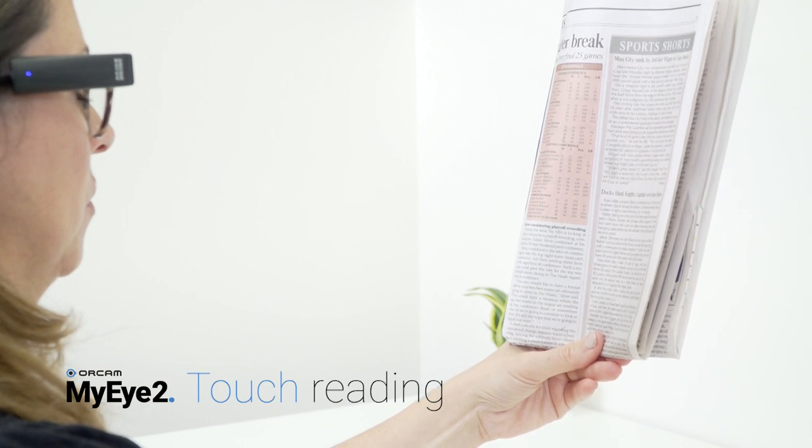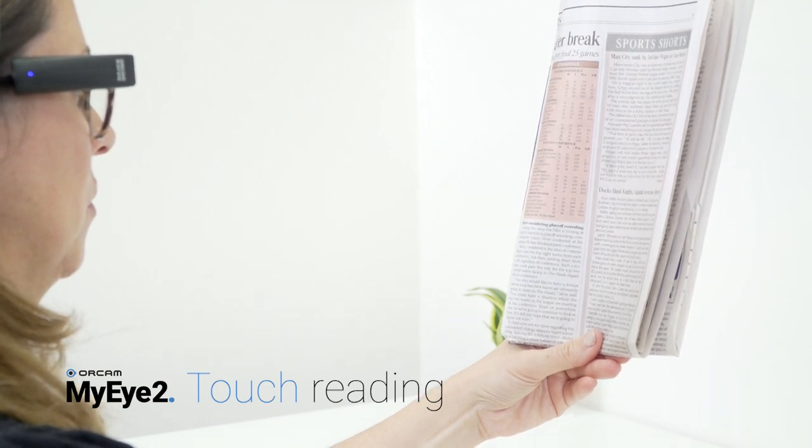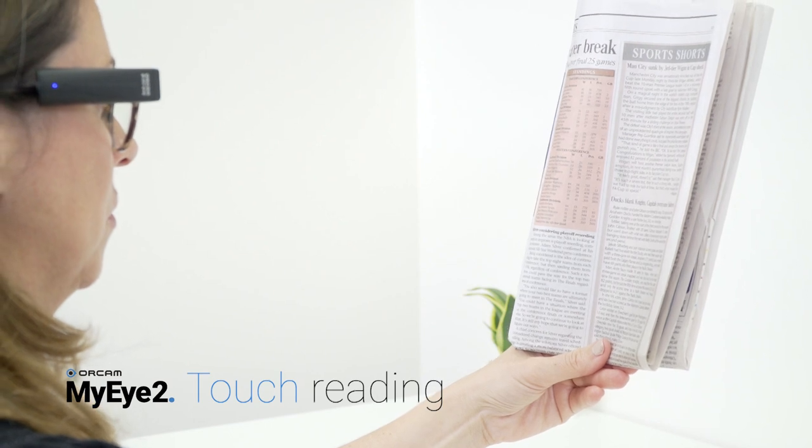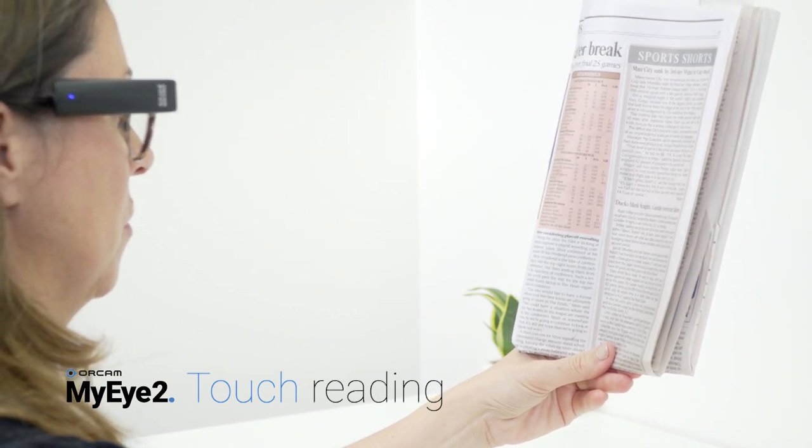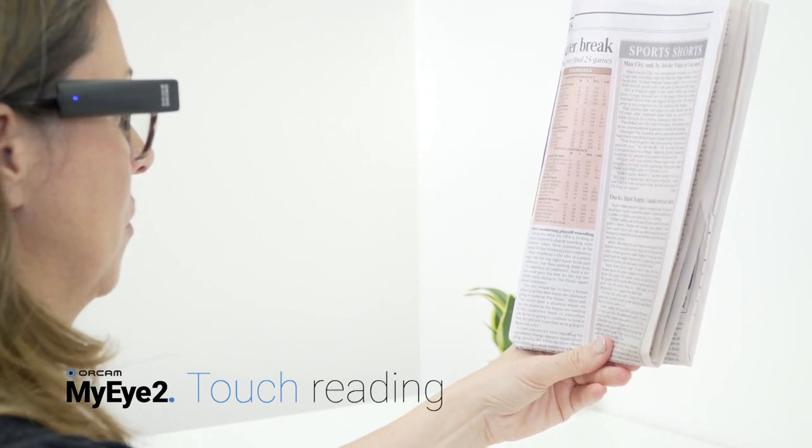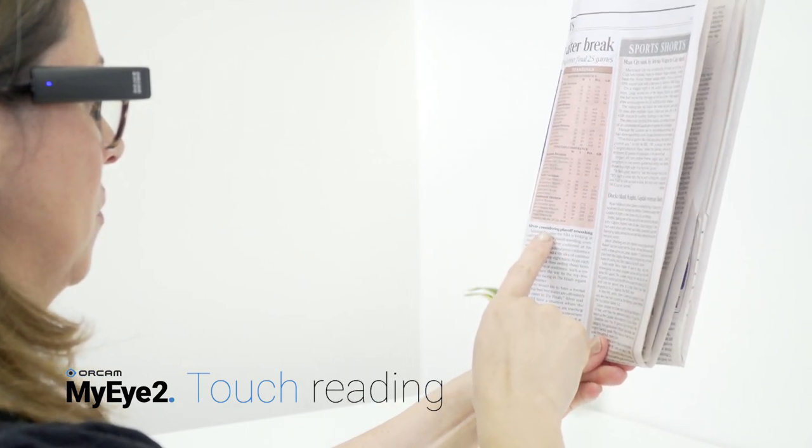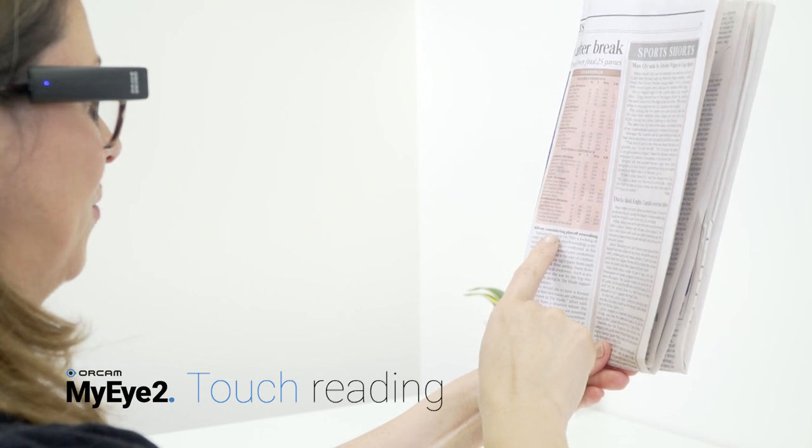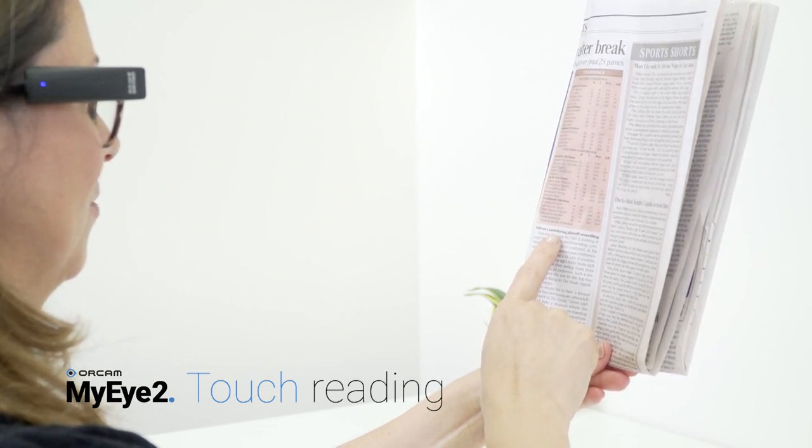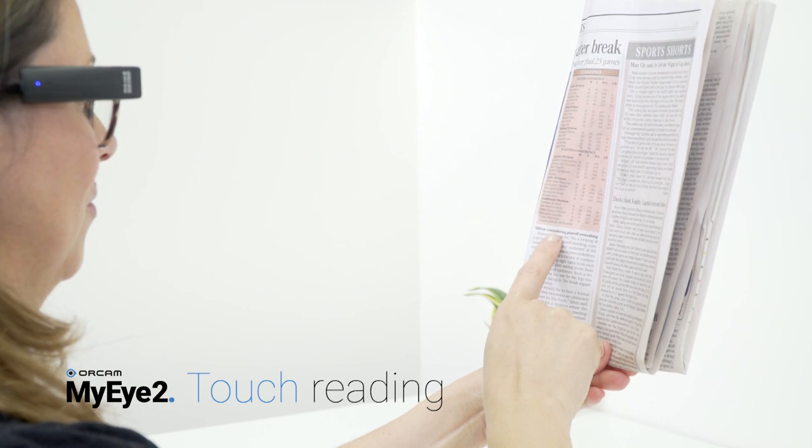Touch reading for when you wish to read a certain newspaper headline or a menu section. Face the text you wish to read and hold it steady. Point and hold your finger directly under the text you want to read, using the pointing gesture, until your OrCam device beeps twice. The device will start reading about three lines above your finger.